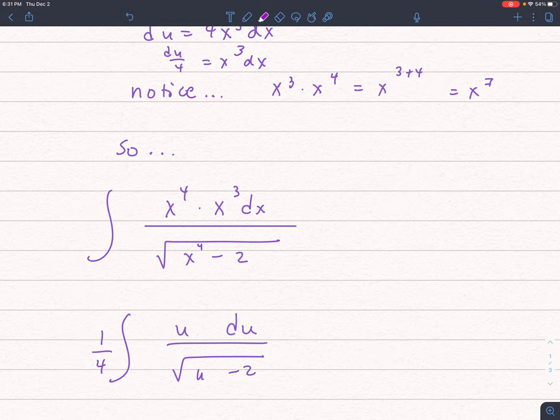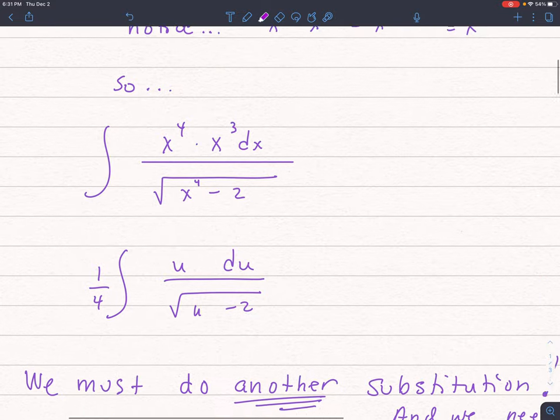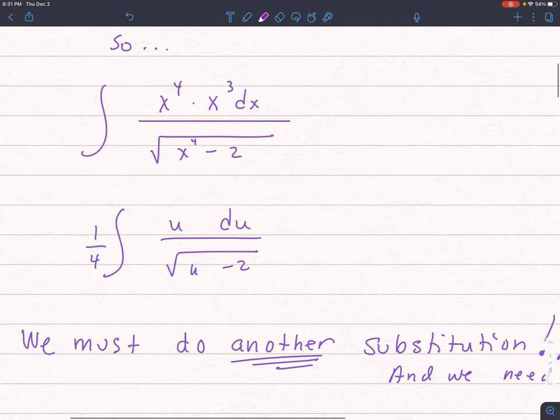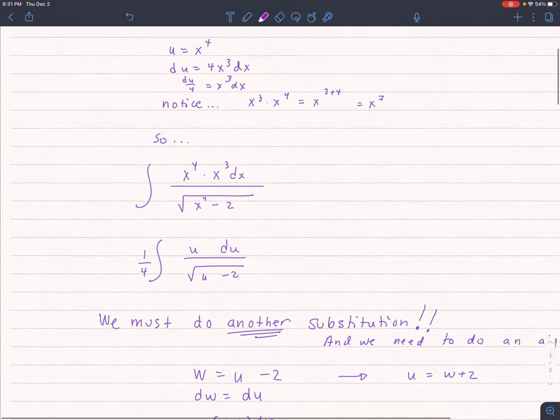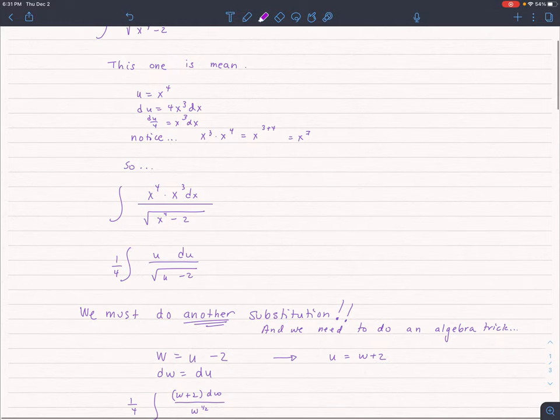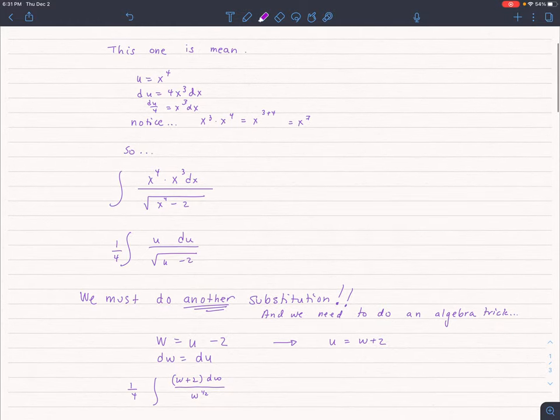Unfortunately, I am going to have to do another u-substitution. Of course, I can't use u, that'd be awfully confusing, and we need to do that annoying algebra trick. So we're going to use w. I'm going to let w equal u minus 2. My goal is to get what's ever under the square root to be by itself. So in that case, I can say dw is just du.